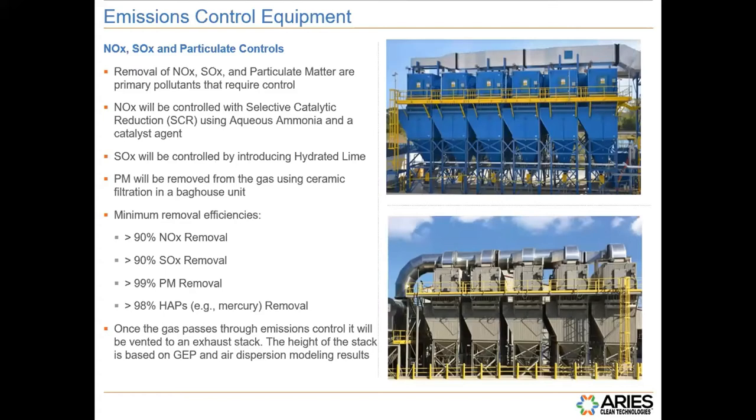The Aries plants also have extensive air emissions control systems. We're going to have what's called a trimer unit, which will remove NOx, SOx, particulate matter. The trimer unit will also have a selective catalytic reduction system using aqueous ammonia that'll control NOx. SOx will be controlled by introducing hydrated lime. The trimer unit also has a ceramic filtration system in the baghouse, which will remove particulate matter. We expect greater than 90% NOx removal and SOx removal, 99% particulate matter removal, and 98% hazardous air pollutant removal, for example, mercury. Once the gas is passed through the emission control system, it will be vented to an exhaust stack. The height of the stack varies project to project. The height is determined using good engineering practice and the results of air dispersion modeling.